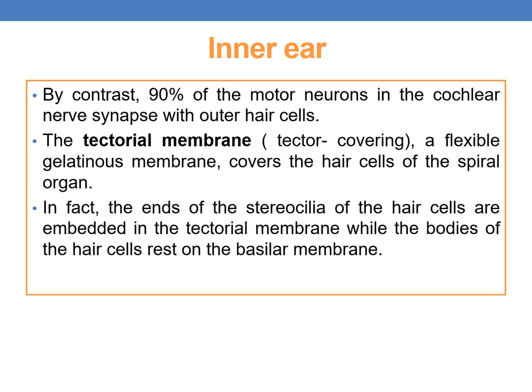The tectorial membrane is a flexible gelatinous membrane that covers the hair cells of the spiral organ. The ends of the stereocilia of the hair cells are embedded in the tectorial membrane, while the bodies of the hair cells rest on the basilar membrane.